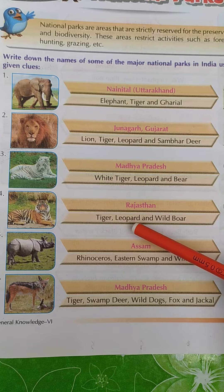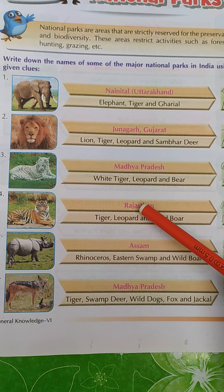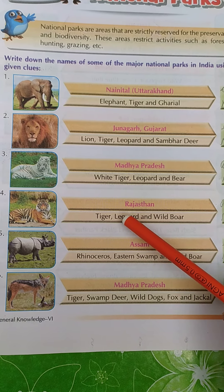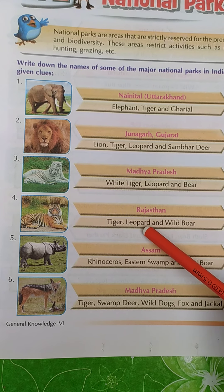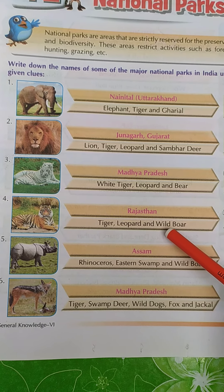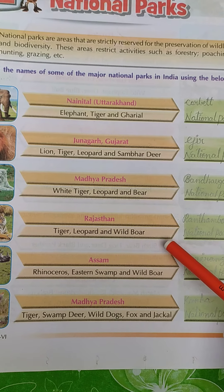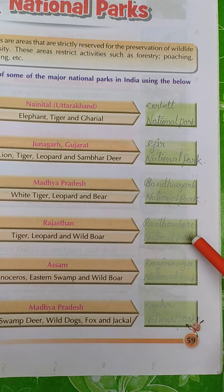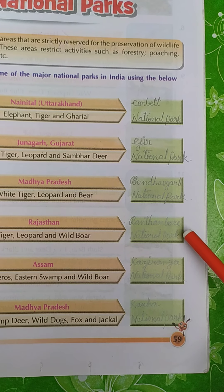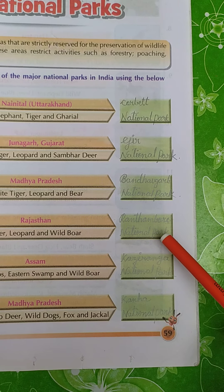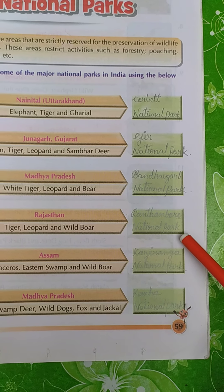Number four. This park is in Rajasthan. The animals are tiger, leopard, and wild boar. The name of this national park is Ranthambore National Park.